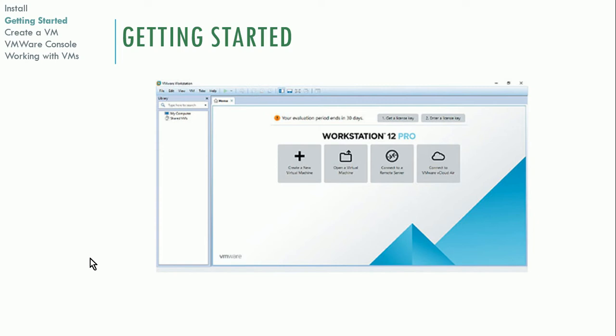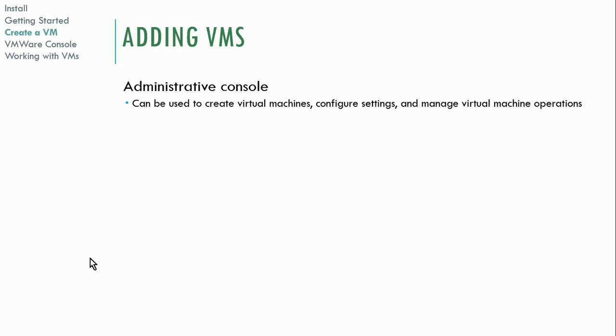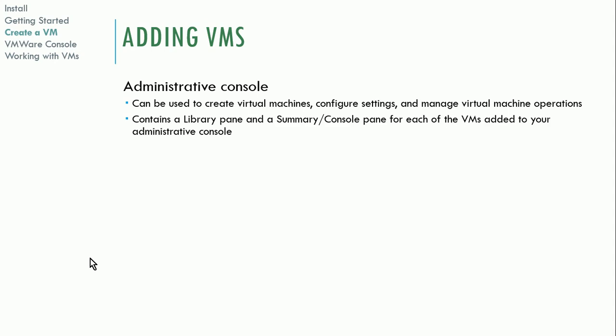Down the left-hand side you have a list of virtual machines. When you click on a machine, you'll see on the right-hand side the tools for that virtual machine in the main console. The administrative console can be used to create virtual machines, configure settings on existing ones, import virtual machines, and manage existing virtual machines. It has a library pane on the left side and a summary console pane on the right for each VM.